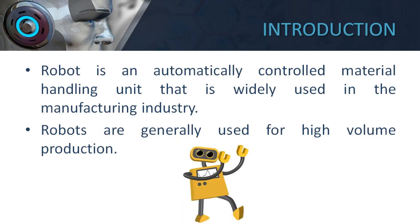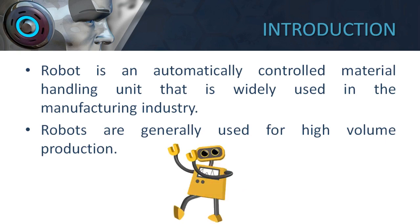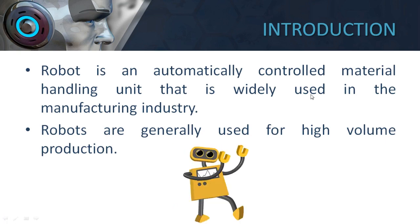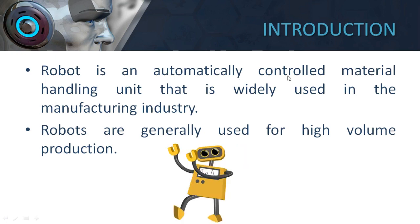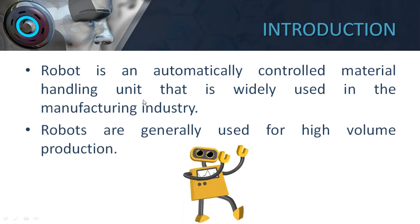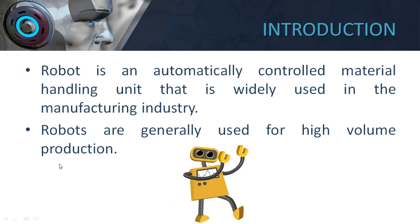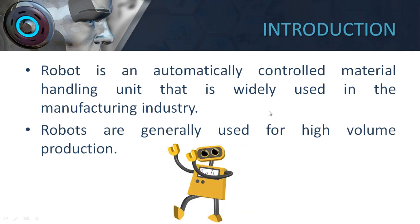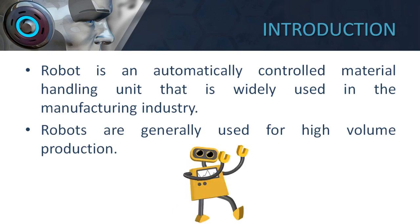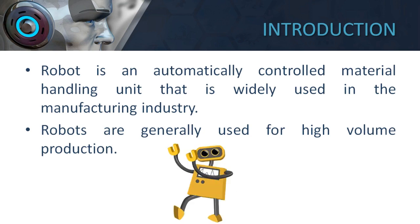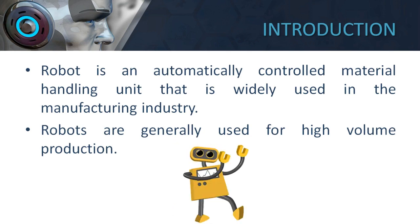The robot is an automatically controlled material handling unit that is widely used in the manufacturing industry. It is required for handling materials and moving them from one place to another location. They are generally used for high volume production — when an industry is producing the same product in very high quantity, robots are used.